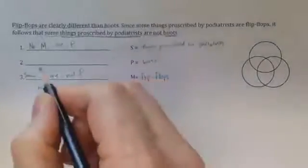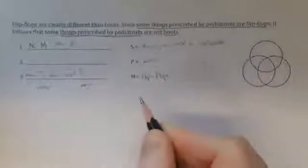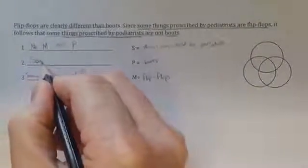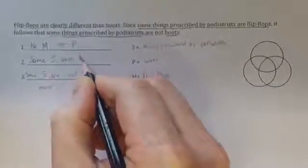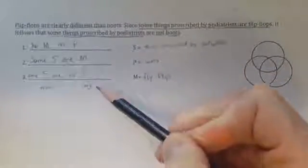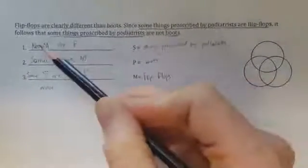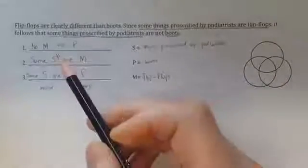The second premise is some things prescribed by podiatrists are flip-flops. So now I simply write some S are M. This is the major premise, because it contains the major term. This is the minor premise, because it contains the minor term. All of the propositions are standard form categorical propositions. Each term is used twice. We're good to go.